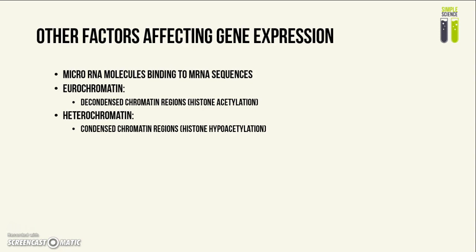Next, we have heterochromatin, which are regions of chromatin that are more condensed, associated with histone hypoacetylation. As a result of being very condensed, the enzymes cannot reach these regions very well, and therefore less transcription can happen.